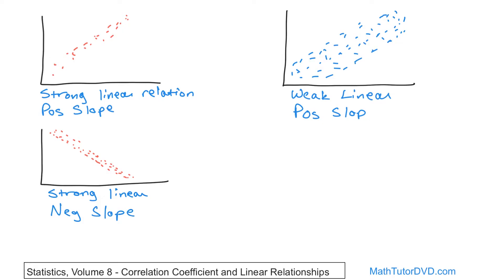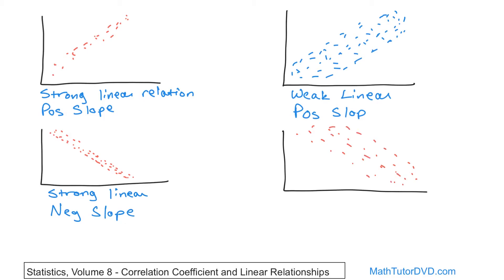By extension, you can see exactly what's going to be in the next case. If you have data points that are spread farther apart and it slopes down and to the right, it's weakly linear. So we say this is a weak linear relationship with a negative slope.